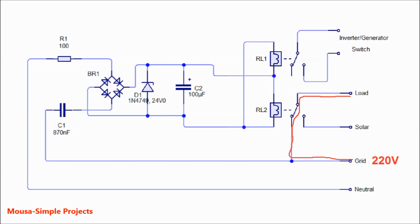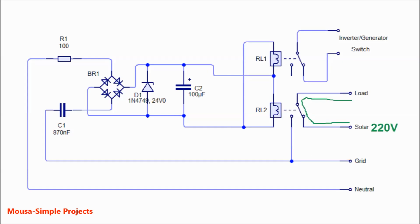Before a power outage, when electricity is coming from the electric grid, the relay runs and connects the electric appliances to the grid. During a power outage, the relay deactivates and connects the appliances to the solar inverter or gasoline generator. The second relay is used for switching the solar inverter or gasoline generator on and off, instead of leaving them running all day long.